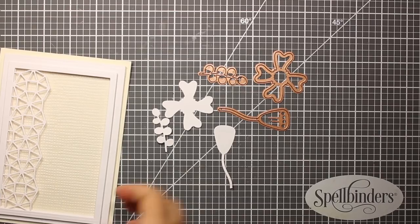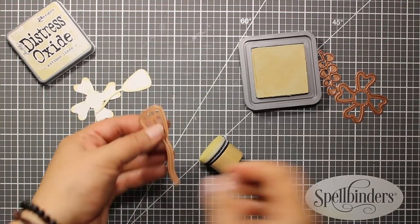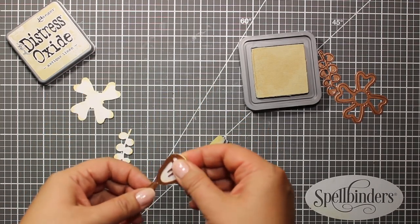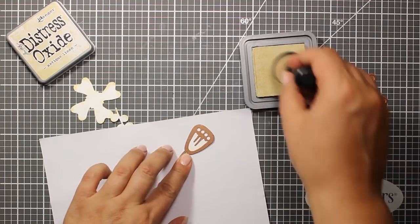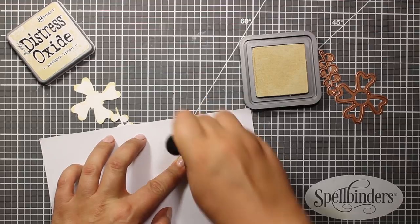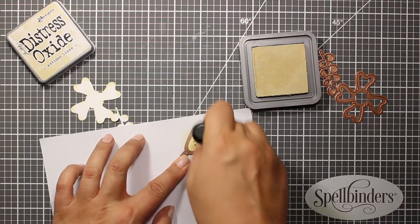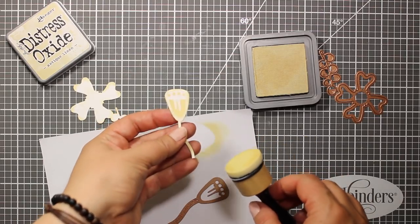I'll be using stylized flower die set to create my bouquet. I've die cut the images out of white cardstock. Then I'm placing them back into the dies to stencil through them. And the ink I'm using is antique linen distress oxide. Here you can see I've die cut all the images but I will not be using the largest flower.